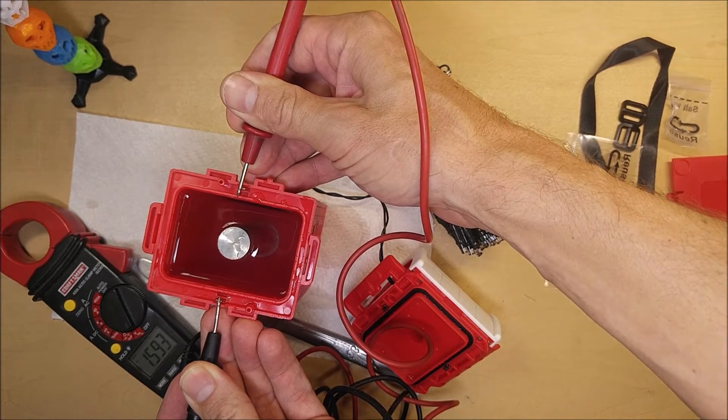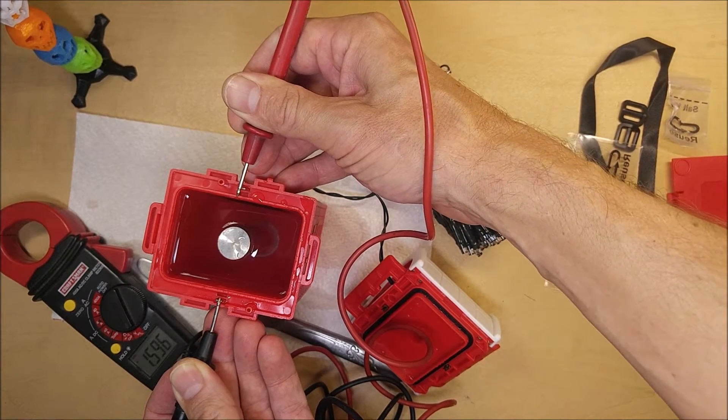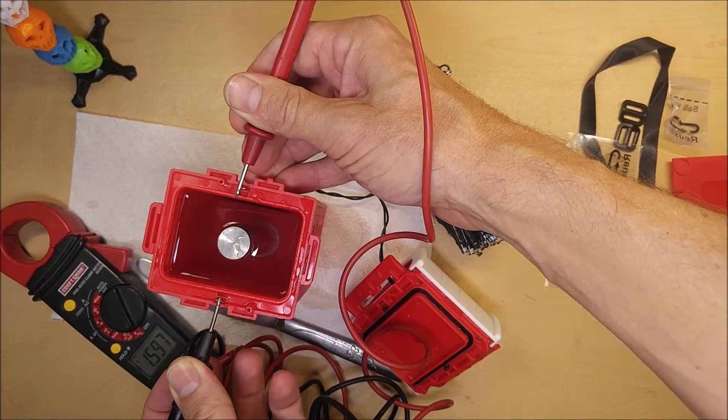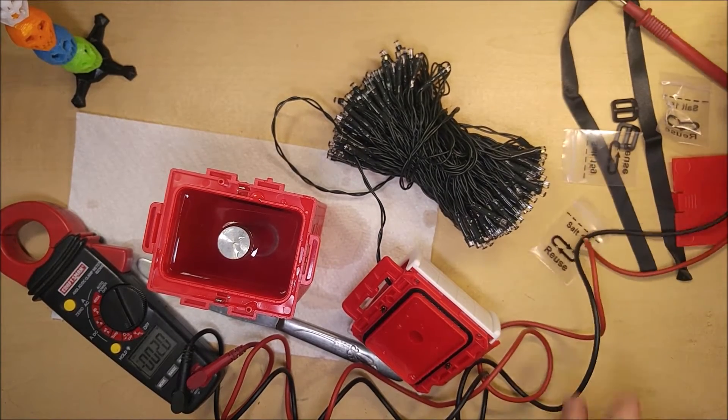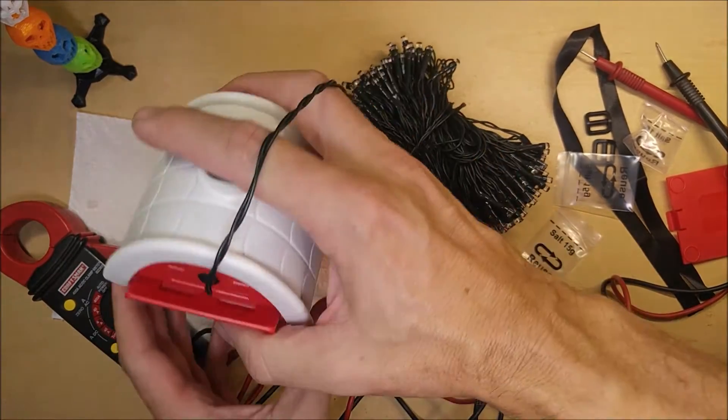All right, now we're getting 1.59 volts. So we're getting about a volt and a half, which is the same as you're going to get out of a AAA battery, a AA battery, or a D cell battery. And I'm guessing these are low voltage LEDs, and they can operate on that voltage. Let's see what kind of modes we get with these things.